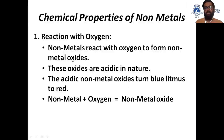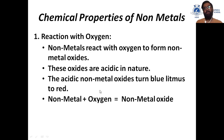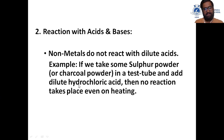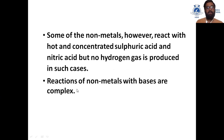Now the chemical properties of non-metals. First is reaction with oxygen: non-metals react with oxygen to form non-metal oxides, which are acidic in nature. These acidic non-metal oxides turn blue litmus paper to red. Non-metals do not react with dilute acids. If we take sulfur powder or carbon powder in a test tube and add dilute hydrochloric acid, no reaction takes place even on heating. Some non-metals however react with hot and concentrated sulfuric acid and nitric acid, but no hydrogen gas is produced. Reactions of non-metals with bases are complex.